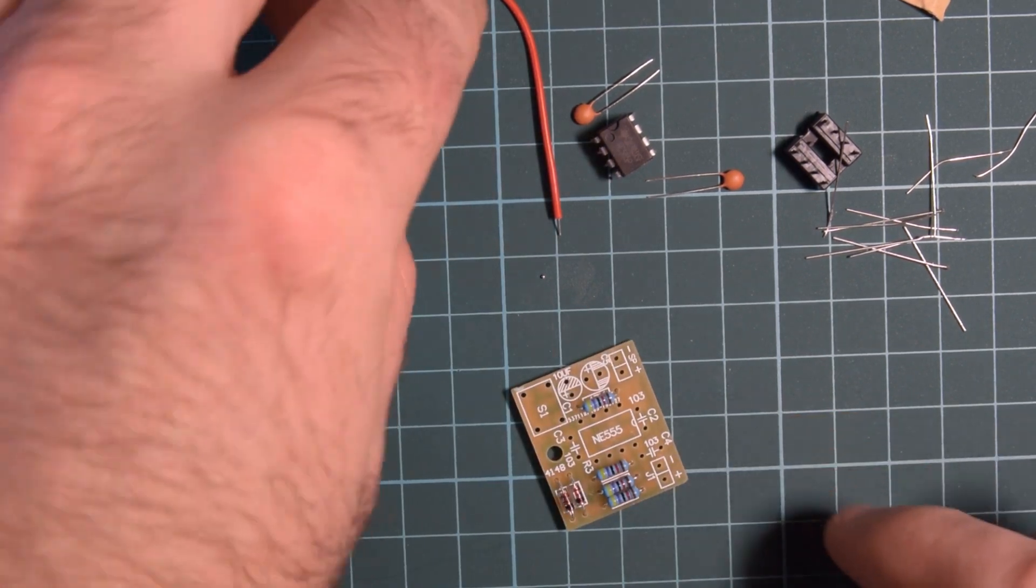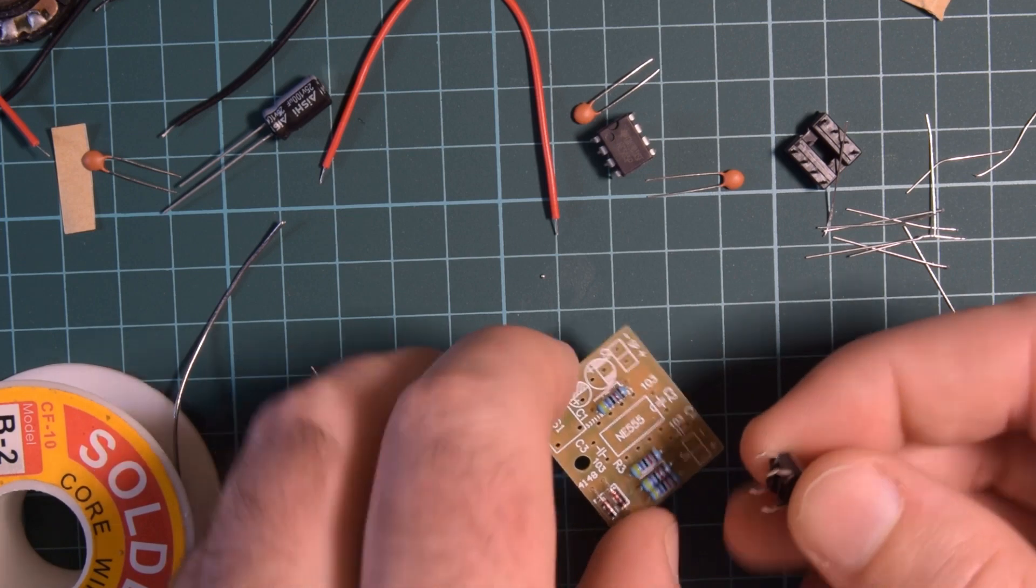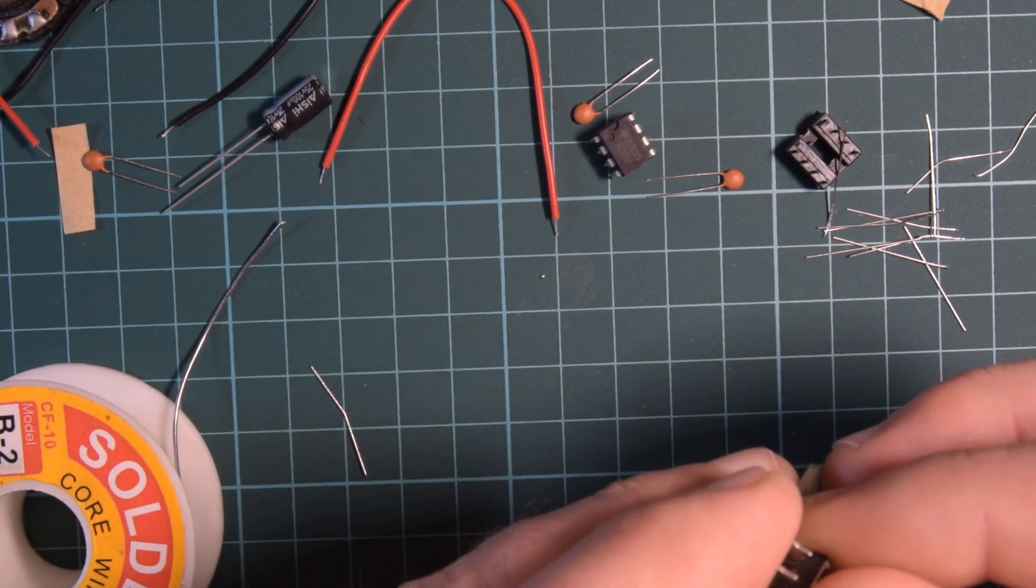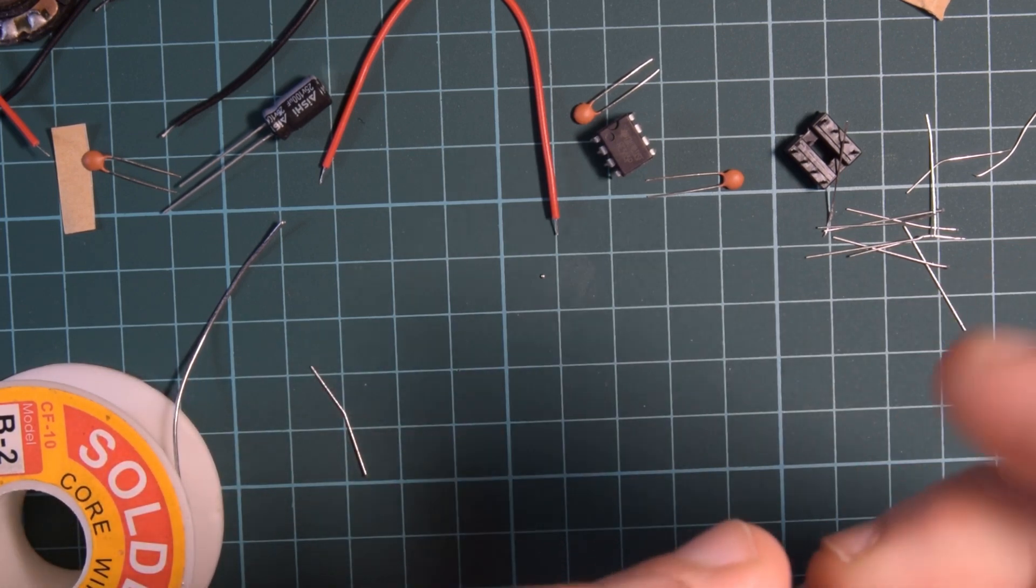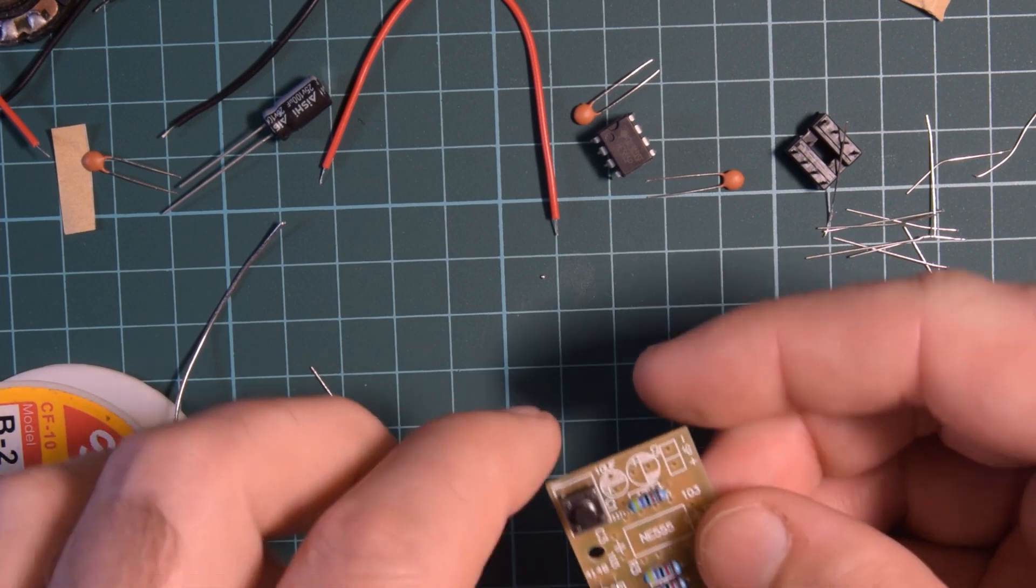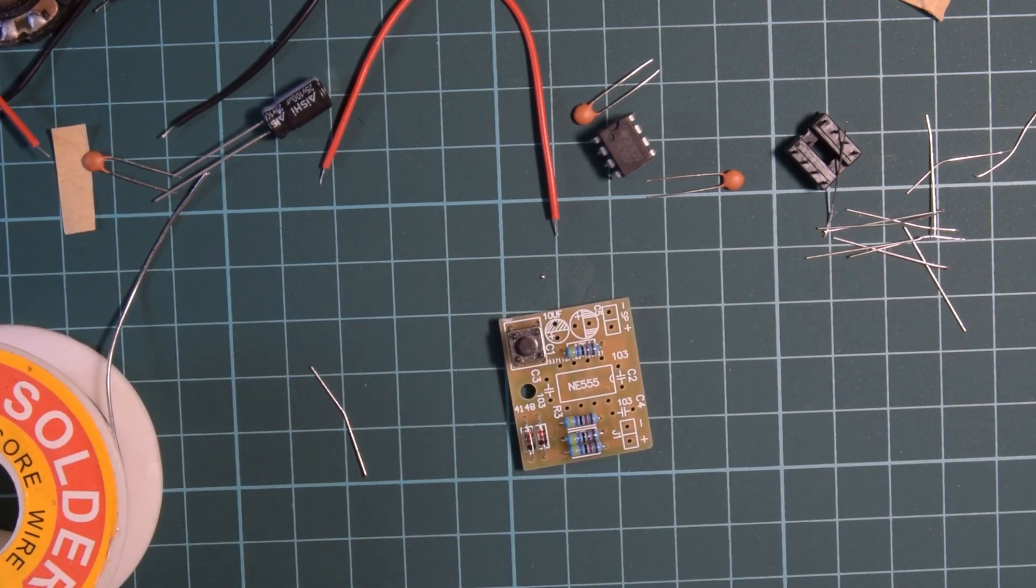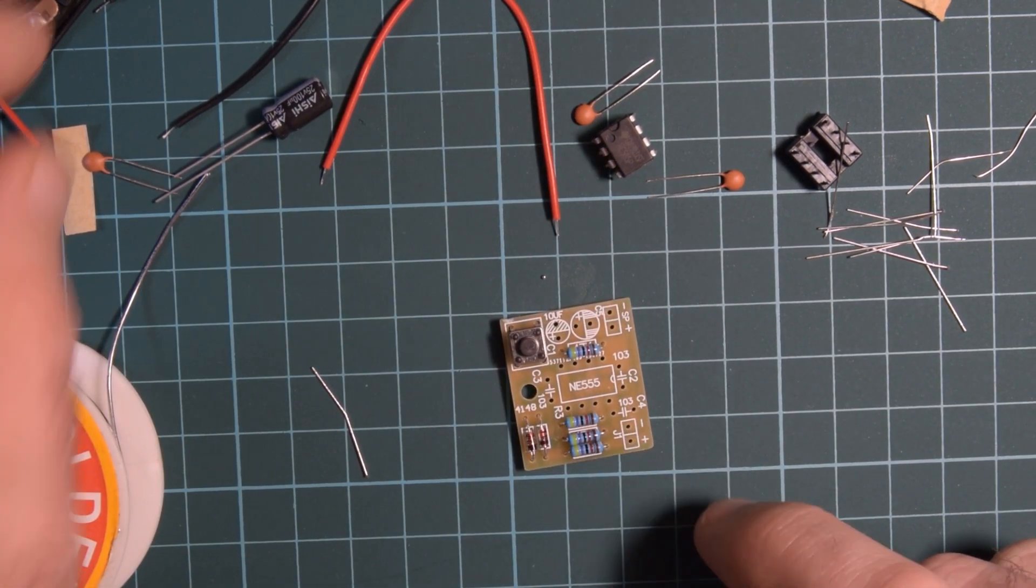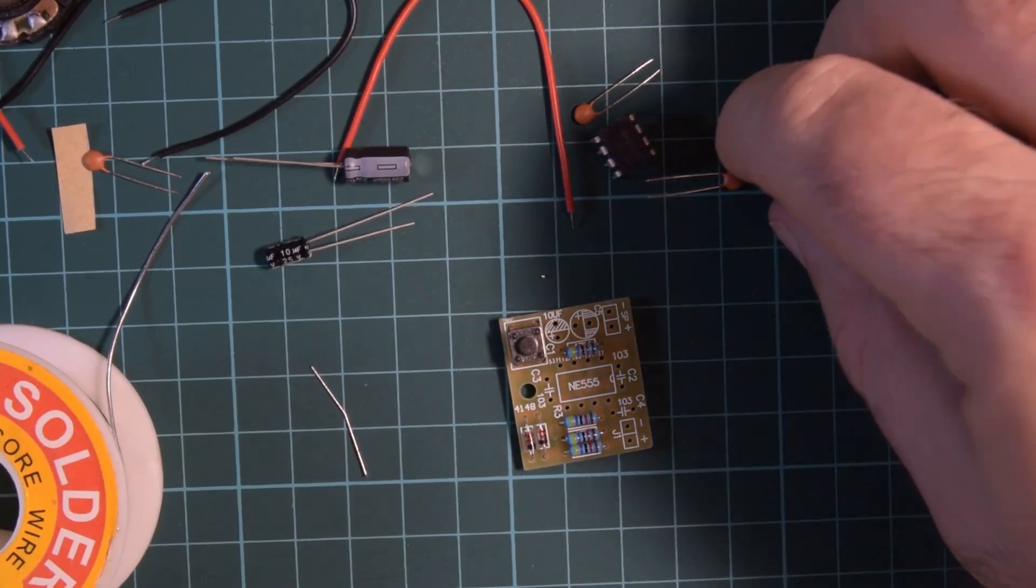Okay that's done all those low profile components. J1 S1. S1 is the switch. The switch will sort of hang on there by itself so I can chuck that one in there. Okay got two caps two electrolytics. There's a there they are.